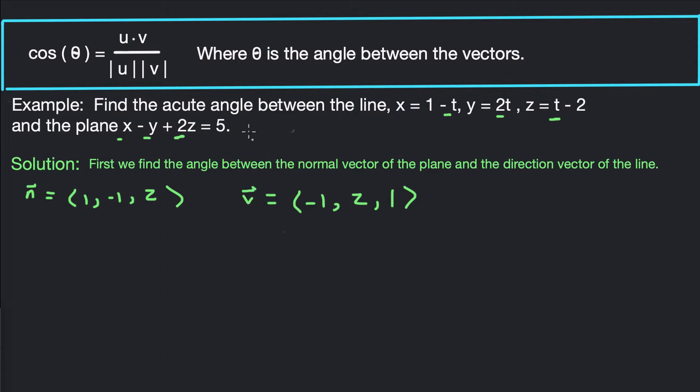So cosine of θ₁. We'll call it θ₁ because it's not really the angle we want, it's going to get us the angle we want. So take the dot product of these two. So that's going to be -1 - 2 + 2 over square root. I'm using this formula up here. 1 + 1 + 4 is 6. And then same thing here, 1 + 4 + 1 is 6. So this is the magnitude of my vectors going right here. The magnitude of the vectors. Square the components, add them together.